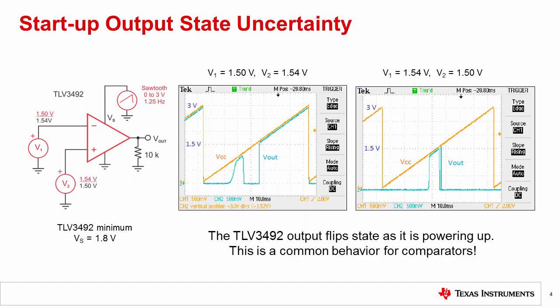A common issue encountered in comparator circuits is known as startup output state uncertainty. Startup state uncertainty means that as the comparator's power supply is ramped, the output may transition back and forth between states regardless of the input signal.